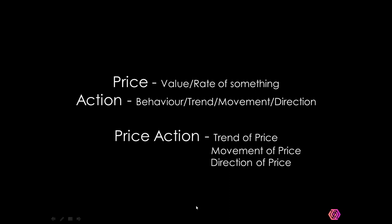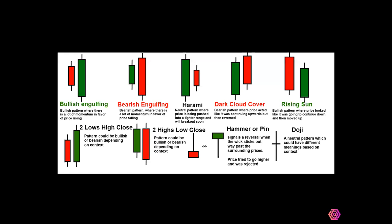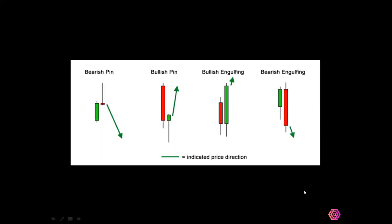Price action is based on those candles — the candlestick patterns you see on the chart. There are specific candlesticks that tell you when to buy and when to sell. You have a handful of them: bullish engulfing, bearish engulfing, hammer, doji, spinning tops, and others — ten in total. They all have a direction they are pointing to at the end of the day.